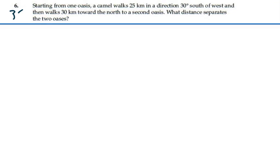Here's problem 3.6. Starting from one oasis, a camel walks 25 kilometers in a direction 30 degrees south of west, then walks 30 kilometers towards the north to a second oasis. What distance separates the two oases?